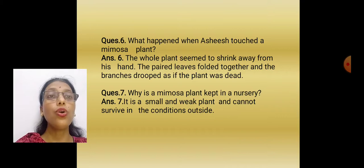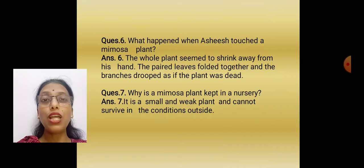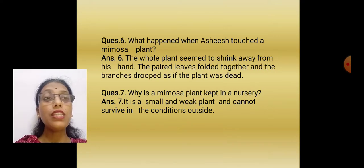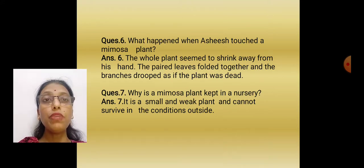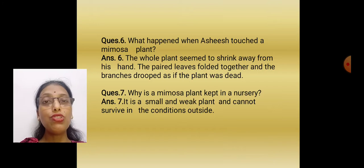Question 6: What happened when Ashish touched a mimosa plant? Bireen Kaka asked Ashish to touch the mimosa plant, and the moment he touched it, they started shrinking and folded. The whole plant seemed to shrink away from his hand. The paired leaves folded together and the branches drooped — drooped means bent down — as if the plant was dead. The plant was actually not dead but it seemed so because the leaves folded and the branches bent down.